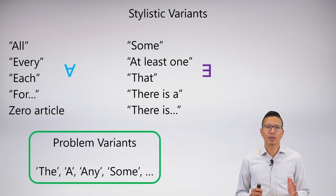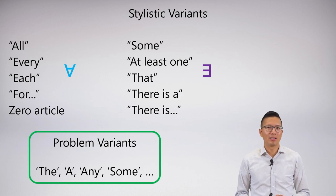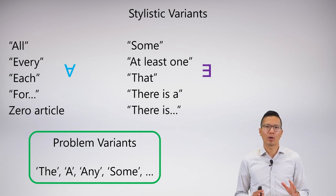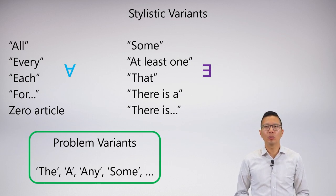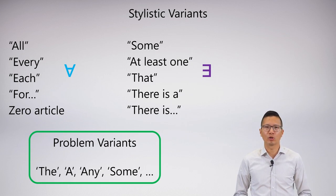Unfortunately, there are some problem variants. It turns out 'the', 'a', 'any', and even 'some' are sort of problematic in some ways. I'm not going to go over how they're problematic in this video. We'll have one later on in this unit which talks about the problems and oddities of the English language in relation to the stylistic variants.